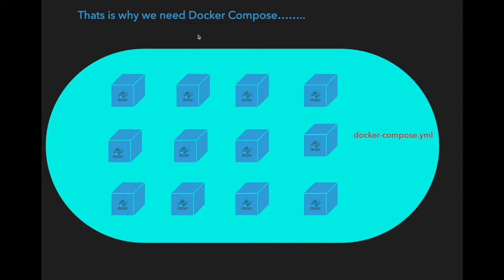That is where Docker Compose comes into the picture. Docker Compose uses a docker-compose.yaml file which contains all the application details under the services section. A service is nothing but the details of each and every Docker container or application. We basically compose all Docker container images into a single unit and run all Docker containers at once using Docker Compose, instead of running each container separately using individual Docker commands.